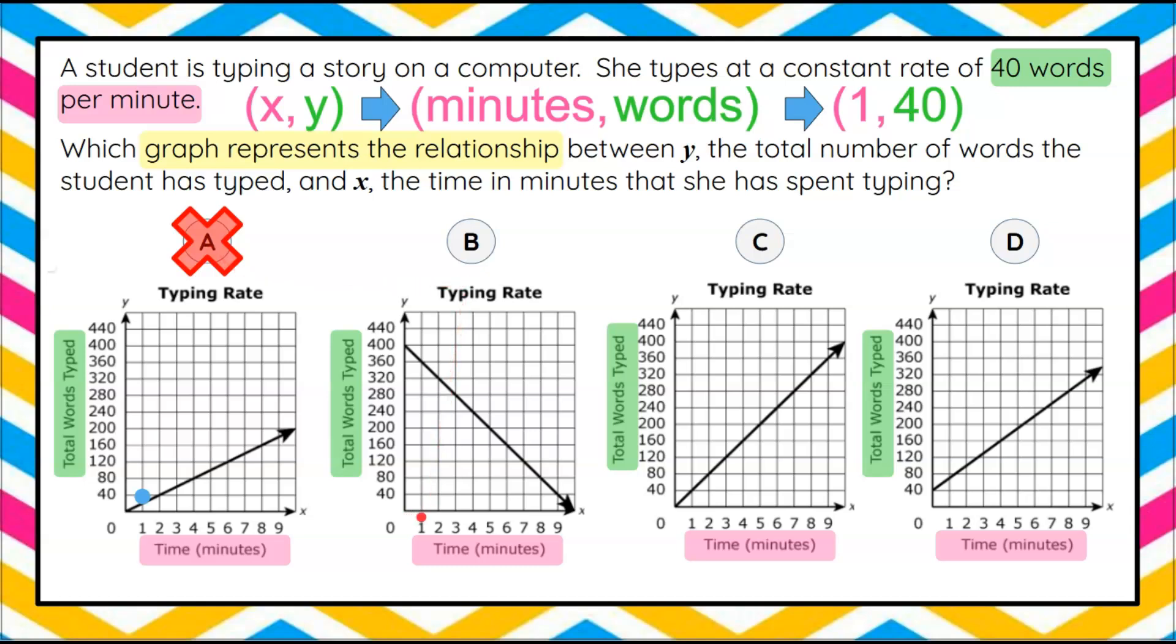On graph B, we're going to graph 1, 40. And that's where our point would be not on the line. So I'm going to eliminate B. Let's graph 1, 40 on graph C. That is on the line. So I just want to look at graph D just to make sure.